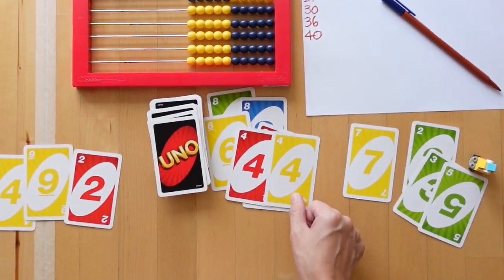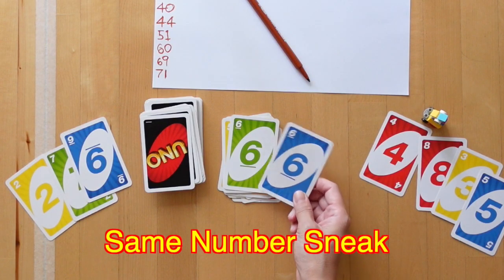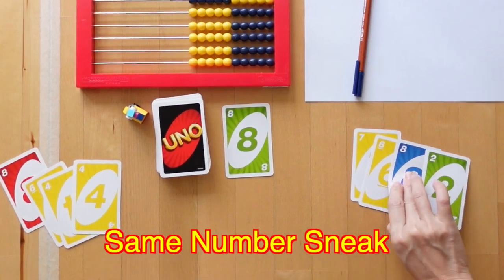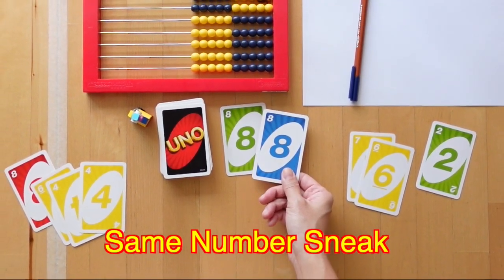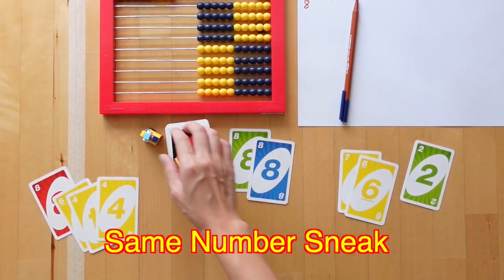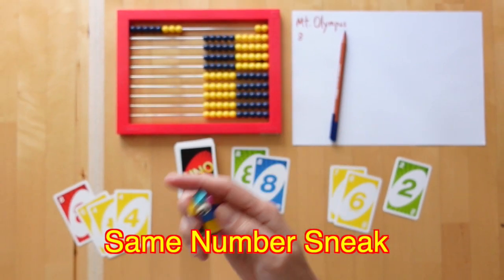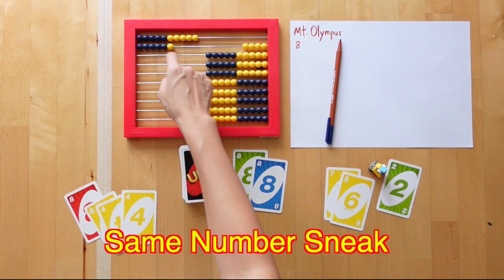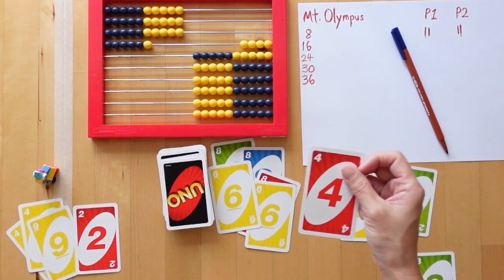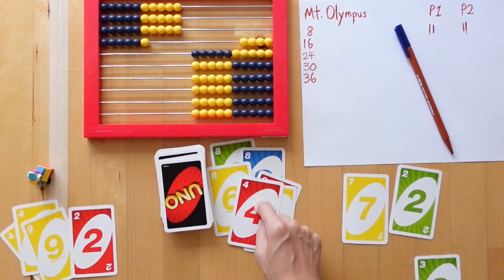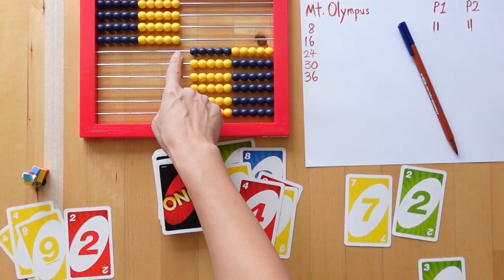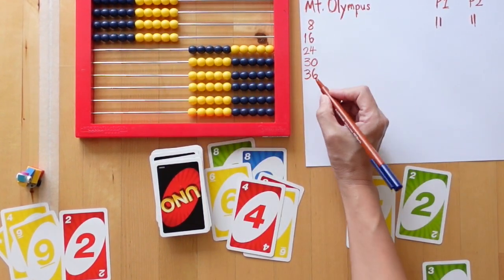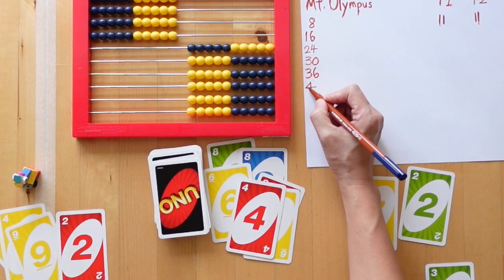You could also continue to implement the same number sneak in the game. Any time an opponent plays a card that matches one in your hand, you may play the match and steal the toy, even if it isn't a multiple of 10. Players grab the toy any time they play a card that brings Mount Olympus total to a multiple of 10 or plays the same number sneak.